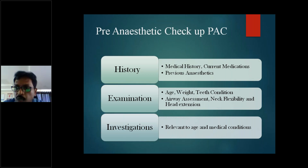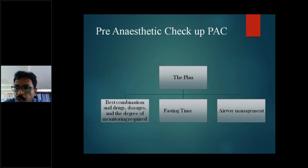We check history, examination, and investigations in the pre-anesthetic room to formulate a plan for the best combination of drugs, dosages, and the degree of monitoring needed. For a 75-80 year old patient with multiple comorbidities like hypertension, diabetes, previous coronary artery disease, on blood thinning agents, or a hypothyroid patient on L-thyroxine - we need to understand the pathophysiology and formulate an appropriate anesthetic plan.